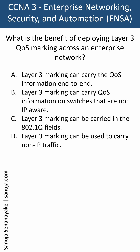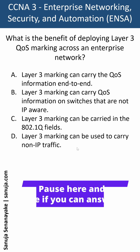The answers are: A) Layer 3 marking can carry the QoS information end-to-end. B) Layer 3 marking can carry QoS information on switches that are not IP-aware. C) Layer 3 marking can be carried in the 802.1Q fields according to IEEE. D) Layer 3 marking can be used to carry non-IP traffic.